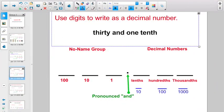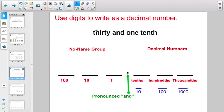Take a look here. Now, it's asking us to use digits to write as a decimal number. They're giving you the word form, right? So, I have 30 and 1 tenth. So, I'm going to have 30 over here in my no-name group. There's 30. Now, I'm going to write in my decimal point for the and. And I have 1 in the tenths place. So, I'm just going to slide a 1 right here. 3, 0, decimal 1. 30 and 1 tenth.